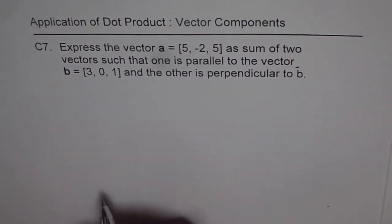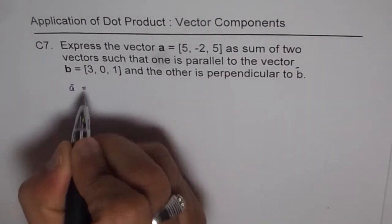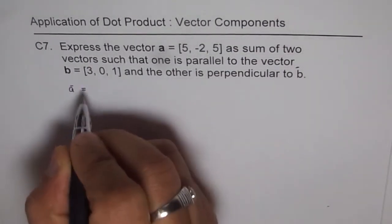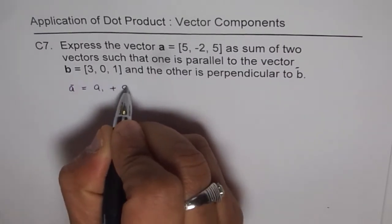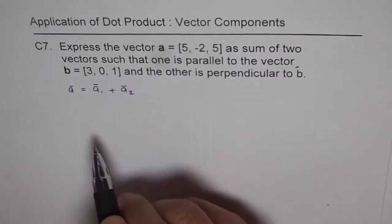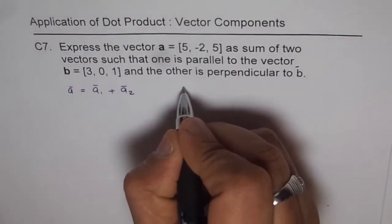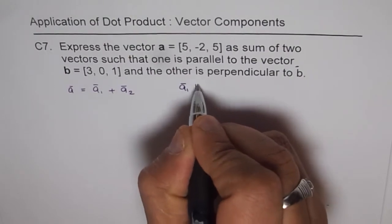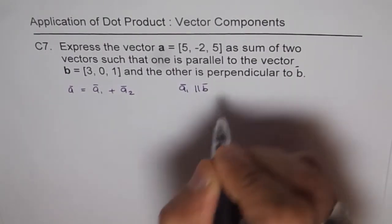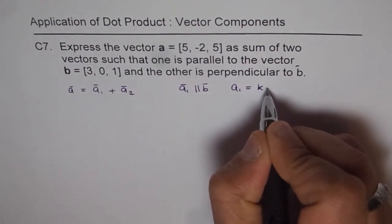So now, as said in the question, vector a is to be split into two vectors, a₁ and a₂. So that one of them is parallel to b and the other one is perpendicular. So let us say that a₁ is parallel to b. In that case, a₁ equals some constant times b.